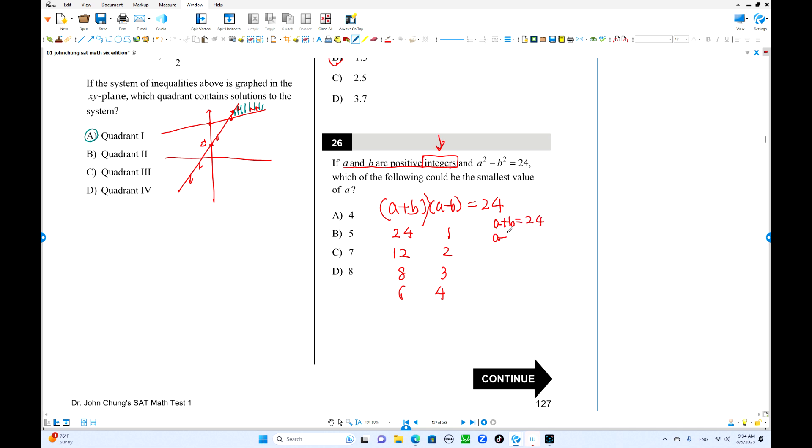You can check it out. a plus b is 24, a minus b is 1. When you add this, 2a equals 25. But when you divide by 2, a is not integer. So the sum of these numbers is an odd number. 24 plus 1 is odd. When you divide by 2, a cannot be integer. So this is out. You have only two choices here. 12 plus 2: 2a equals 14, a equals 7. Second one, 6 and 4: 2a equals 10, a is 5. We're going to find the smallest value of a. 5 is the answer.